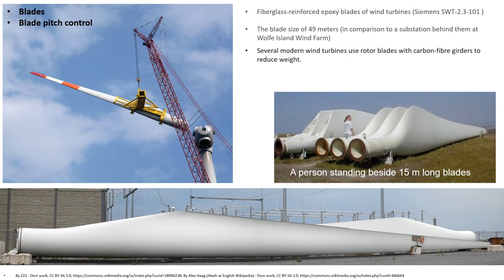Next we shall discuss about the blades. Wind turbines developed over the last 50 years have almost universally used either 2 or 3 blades. Aerodynamic efficiency increases with the number of blades but with diminishing returns. Increasing the number of blades from 1 to 2 yields a 6% increase in aerodynamic efficiency, whereas increasing the blade count from 2 to 3 yields only an additional 3%. Further increasing the blade count yields minimal improvement and sacrifices too much blade stiffness as the blade becomes thinner.